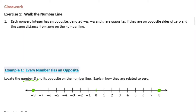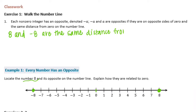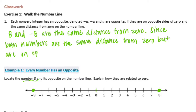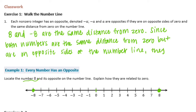8 and negative 8 are the same distance from 0. Since both numbers are the same distance from 0, but are on opposite sides of the number line, they are opposites.